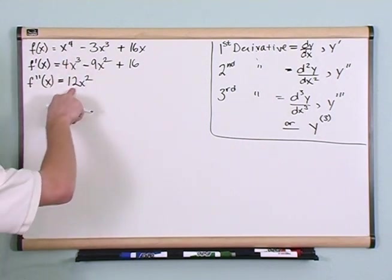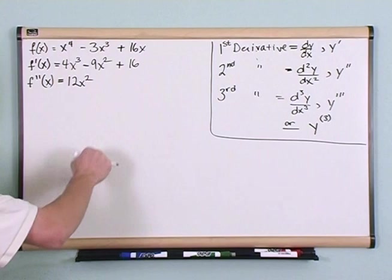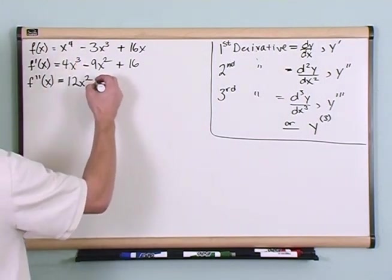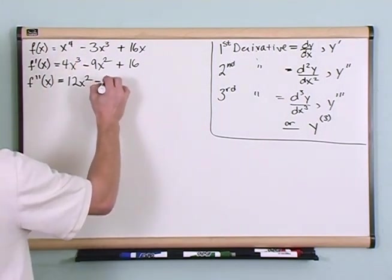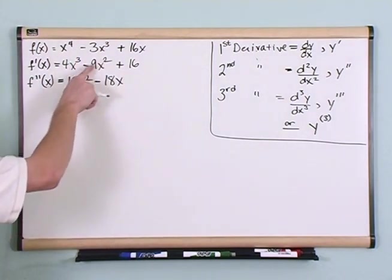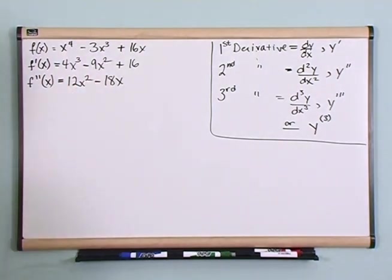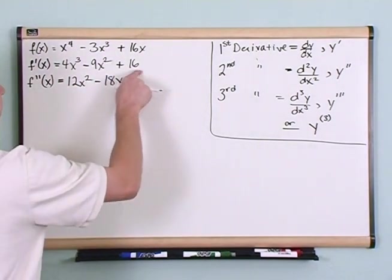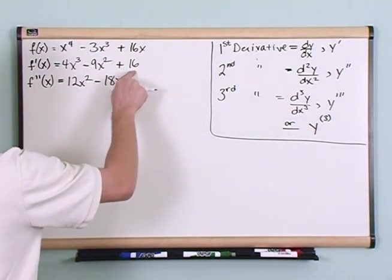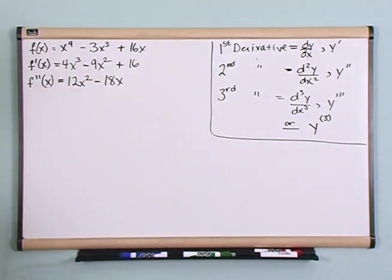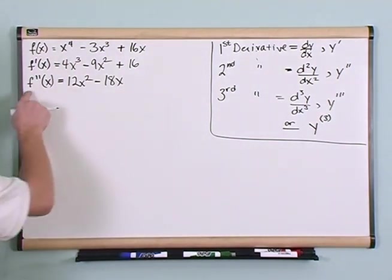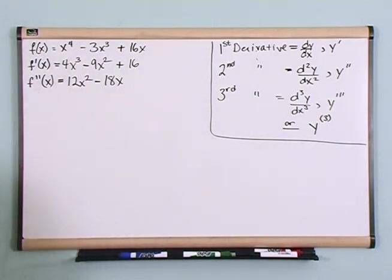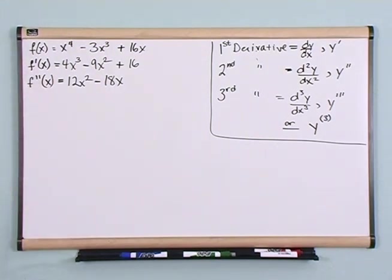We have 12x²: 3 times 4 gives me 12, and the exponent is 3 minus 1. Then minus 18x, because 9 times 2 is 18 and the exponent is 1. And 16 is a constant, so the derivative of that is 0. So these are your answers: this is the first derivative, and this is the second derivative. It's very simple, which is why I'm not going to work too many problems in this section.